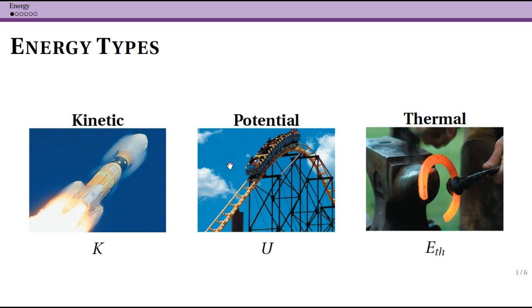Potential energy, in general, is an idea of stored energy. We use the capital letter U, and we frequently give it a subscript to denote what type of potential energy we are talking about. This picture is representing gravitational potential energy, which is very common, but not the only one we are going to talk about.